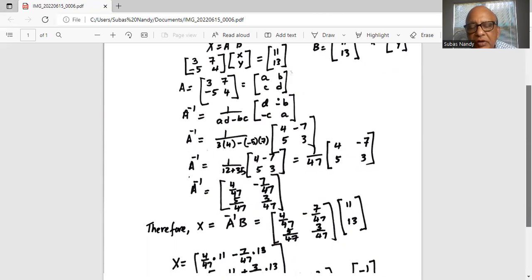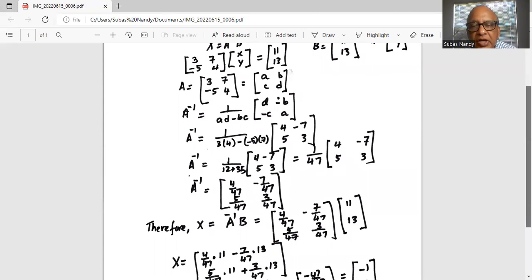So A inverse becomes 4 over 47 in the first row, first column. First row, second column is minus 7 over 47. Second row, first column is 5 over 47. Second row, second column is 3 over 47.